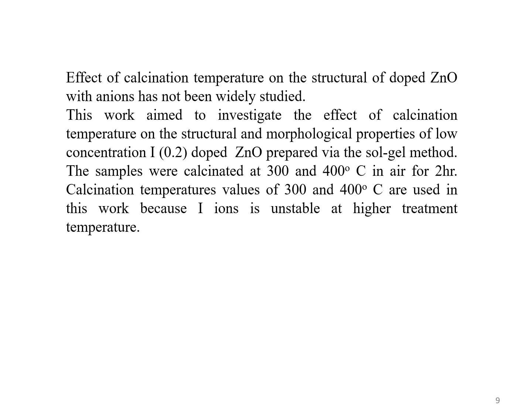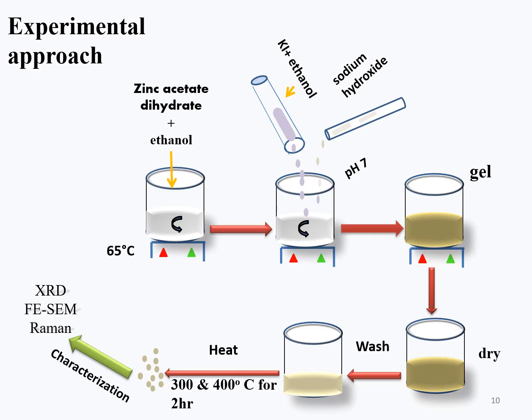The samples were calcinated at 300 and 400 degrees Celsius in air for 2 hours. Calcination temperature values of 300 and 400 Celsius are used in this work because iodine is unstable at higher treatment temperatures.